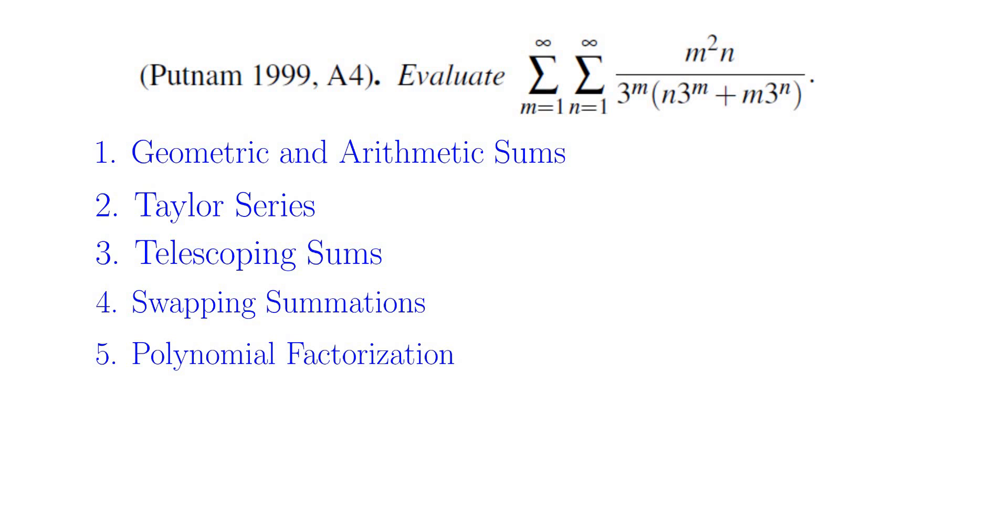So let's get into the swapping summations. When you swap the summations, basically there are two ways of doing that: either you swap the summations directly, or in this case because of the symmetry between m and n, you could just swap the two variables m and n.